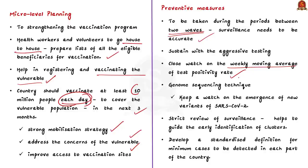The author also suggests genome sequencing technique as another surveillance technique. The genome sequencing technique will help us to keep a watch on the emergence of new variants of COVID-19 virus. The surveillance program in our country needs strengthening. In addition to it, the article suggests developing a standardized definition for minimum cases to be detected in each part of the country. This step helps in identifying areas where there is poor reporting and helps in strengthening the overall response in these areas.